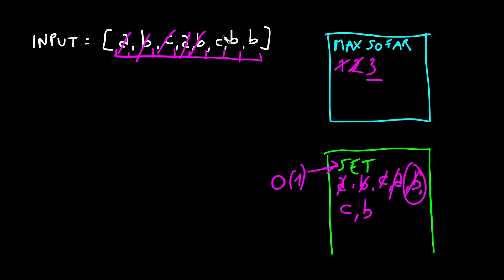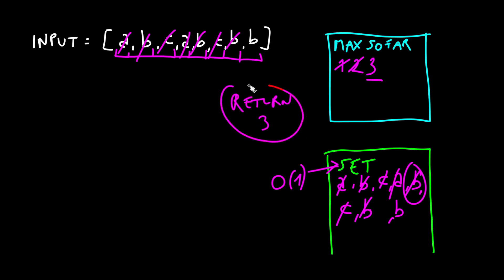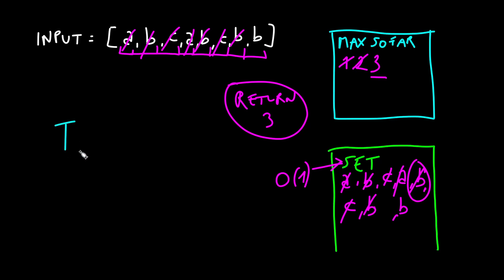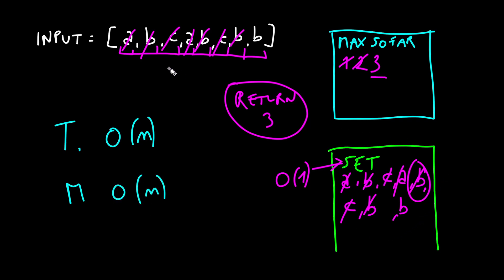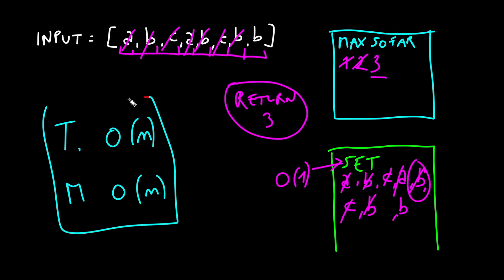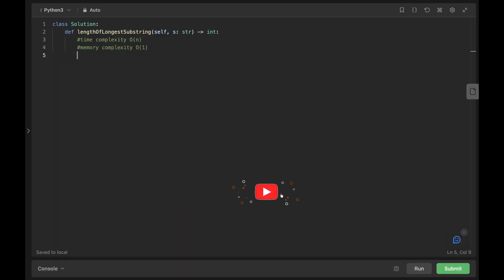We have another 'b': it's in the set, so we pull the first element 'c' and remove it. 'b' is still in the window, so we remove 'b', then add the last 'b'. We've reached the end, so we return the max — which is 3. The time complexity is O(n) because we iterate through the input only once, and the space complexity is O(n) because in the worst case every letter is in the set. This is an efficient solution.